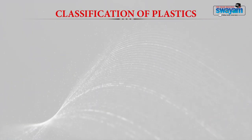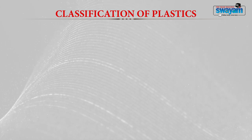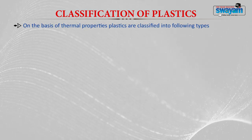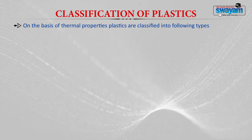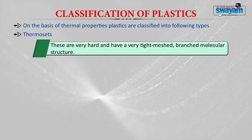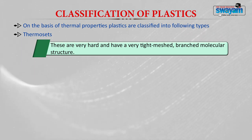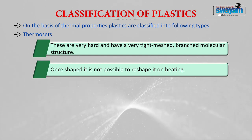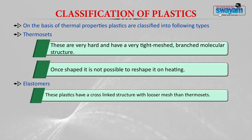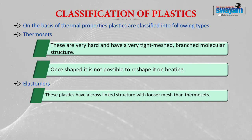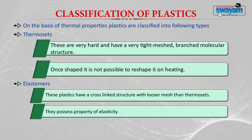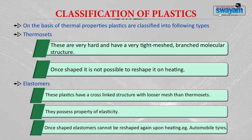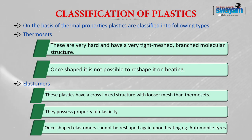Plastics are classified into different types based on thermal property as well as on size. Based on thermal property they are classified into three types: thermosets, thermoplastics, and elastomers. Thermosets are very hard with a tight meshed branched molecular structure. Once they are shaped into a proper form they cannot be reshaped even after heating. Elastomers have a cross-linked structure with a looser mesh than thermosets. They possess the property of elasticity, and once shaped they also cannot be reshaped upon heating. An example is automobile tires.